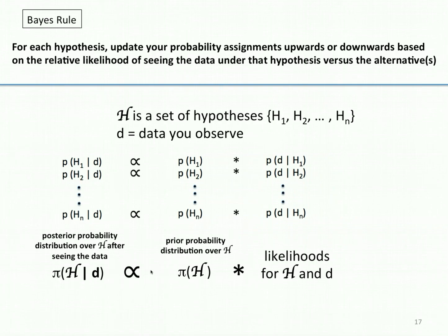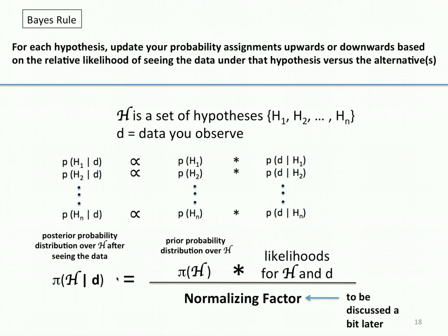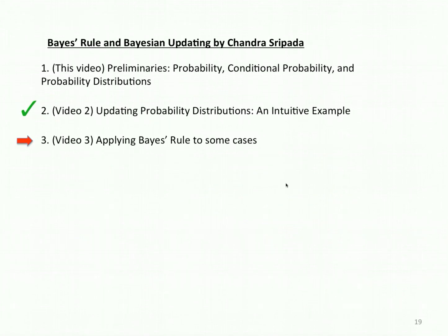Thus far I've been saying what that distribution is proportional to. But if I want to get the actual values — what this posterior distribution is equal to — I need to divide through by a normalizing factor, and that's going to be discussed a bit later. That concludes video 2 on updating probability distributions. In the next video, we'll apply Bayes' Rule to some concrete cases.